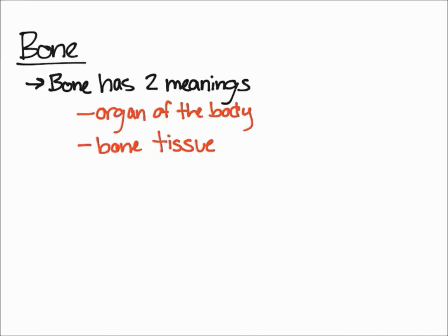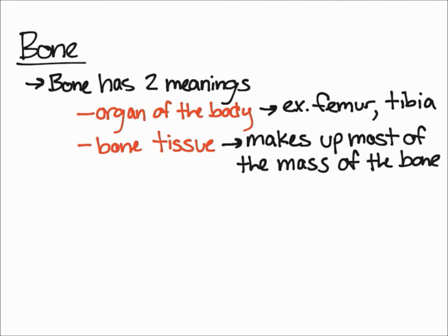In this video I'm going to talk about what bone is. When we talk about bone, we generally refer to two different things — bone can essentially have two meanings. It can either be referred to as an organ of the body, for example your femur and your tibia, essentially the bones that compose your body. Another meaning of bone is bone tissue, which actually makes up most of the mass of what we generally know as bones.